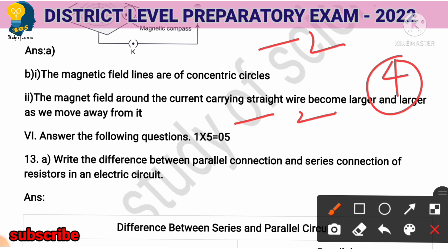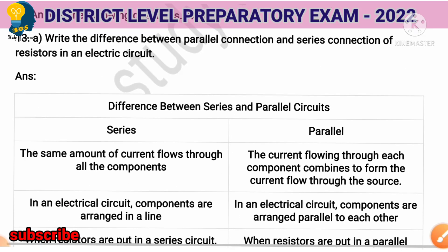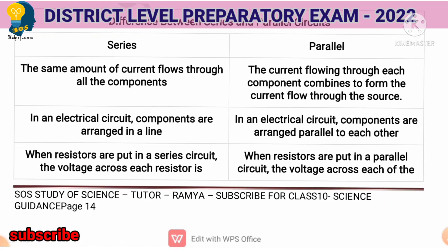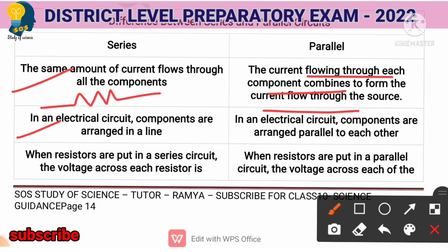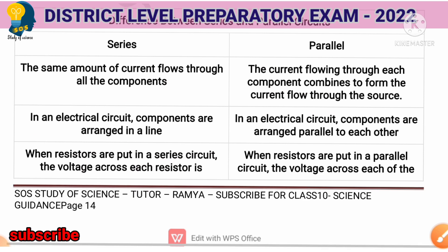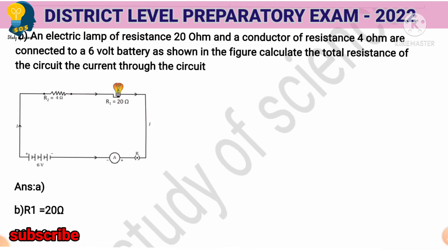Five-mark question: What is the difference between parallel connection and series connection? In a series connection, the same amount of current flows through all components. In a parallel connection, the current flowing through each component combines to form the total current flowing through the source. Components in series are arranged in a line, while components in parallel are arranged side by side.